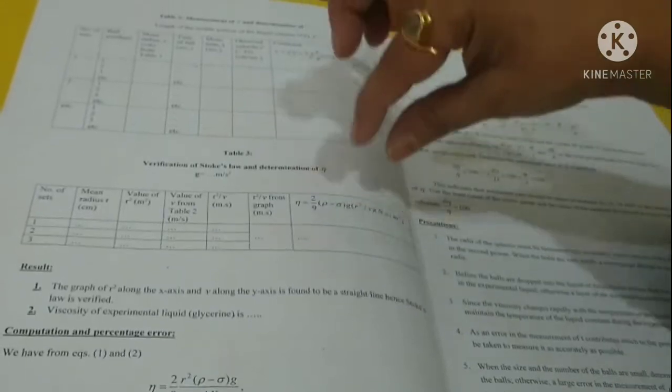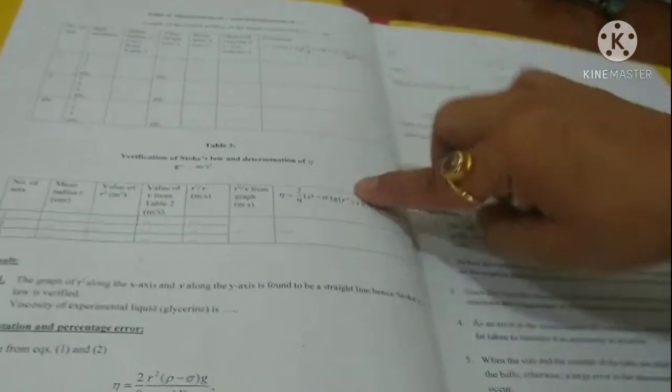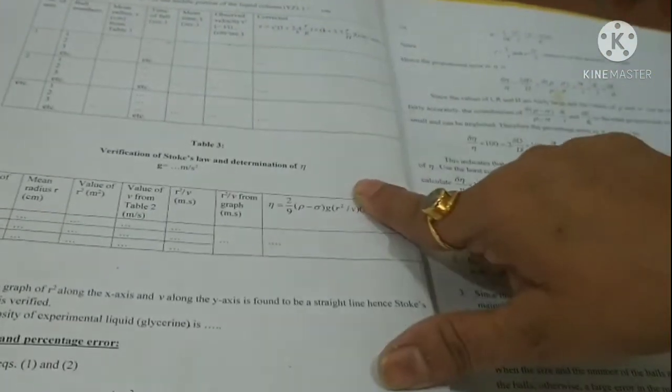From there, we take out the slope and then multiply it by the appropriate factors and get the eta. This is how we calculate the coefficient of viscosity.